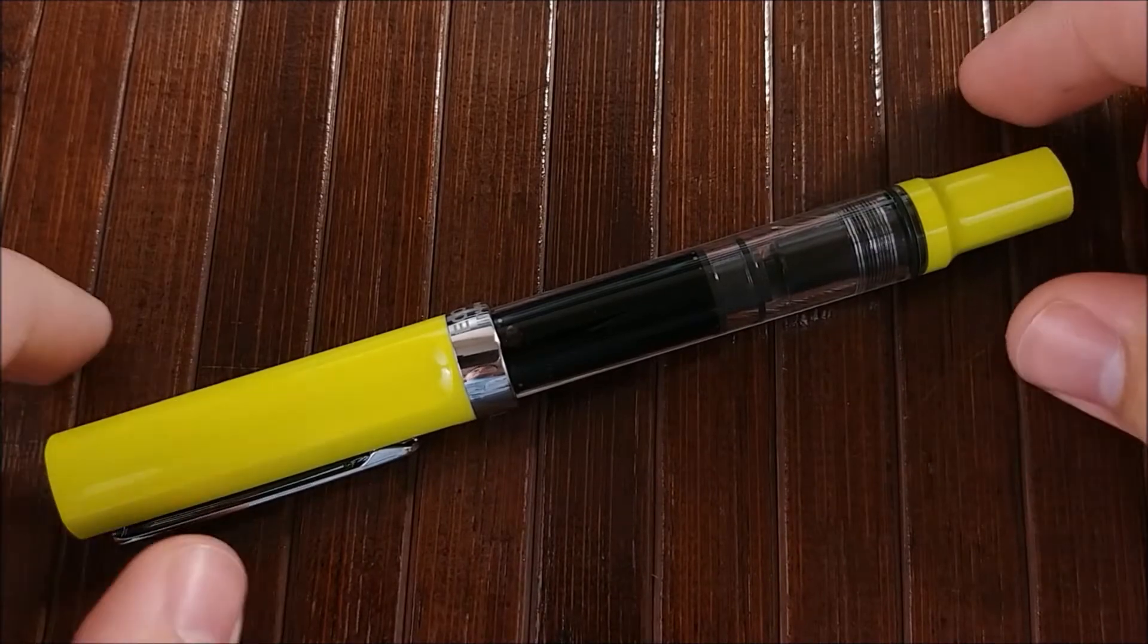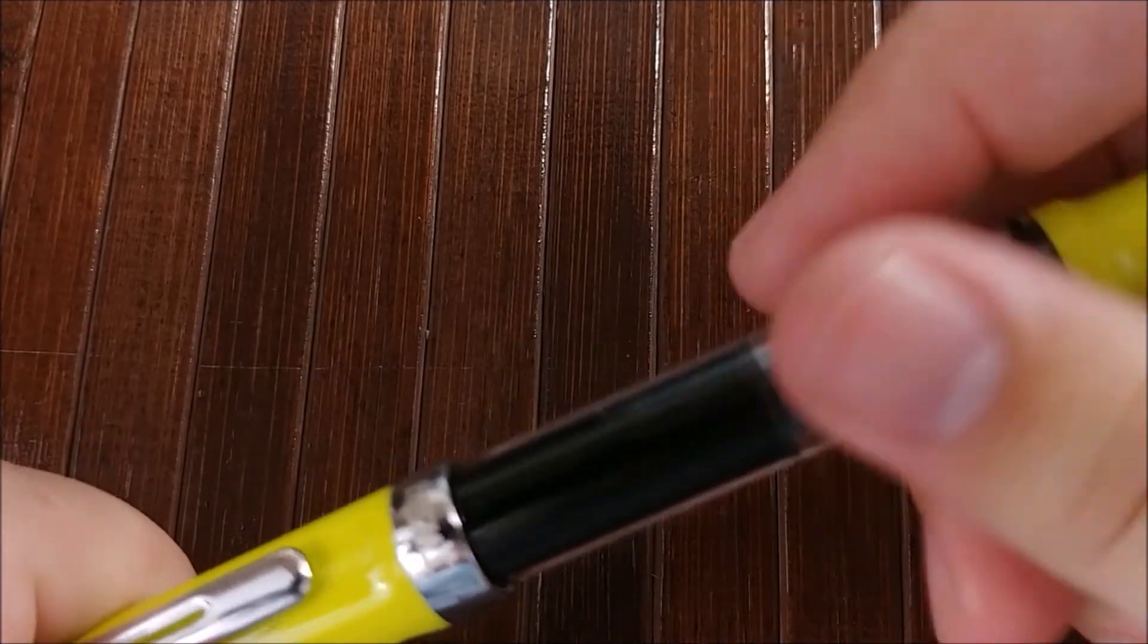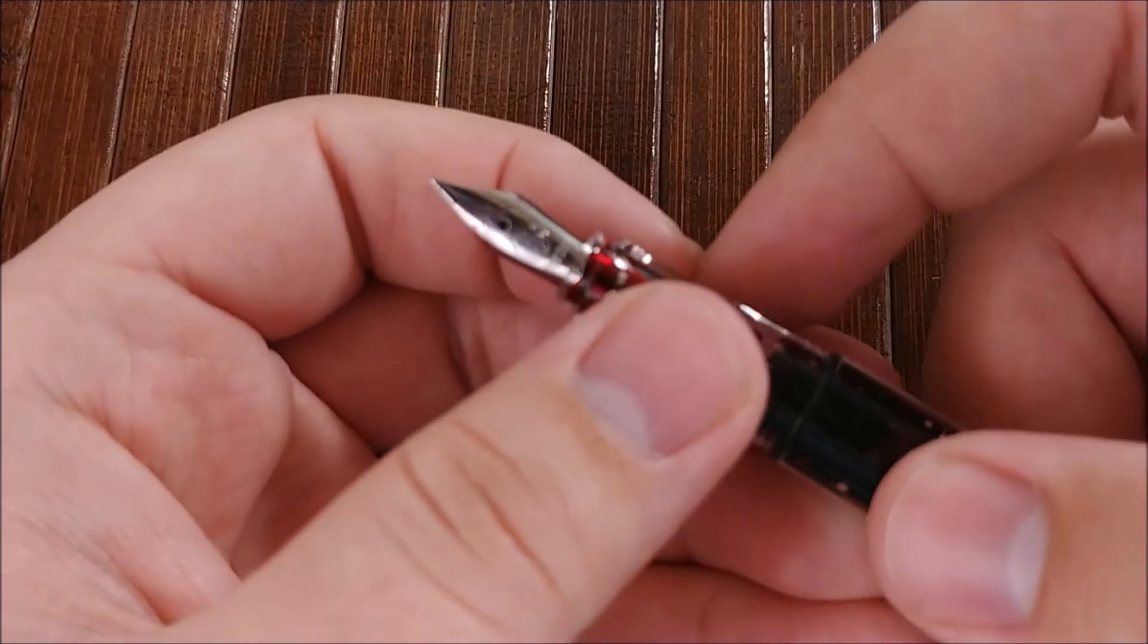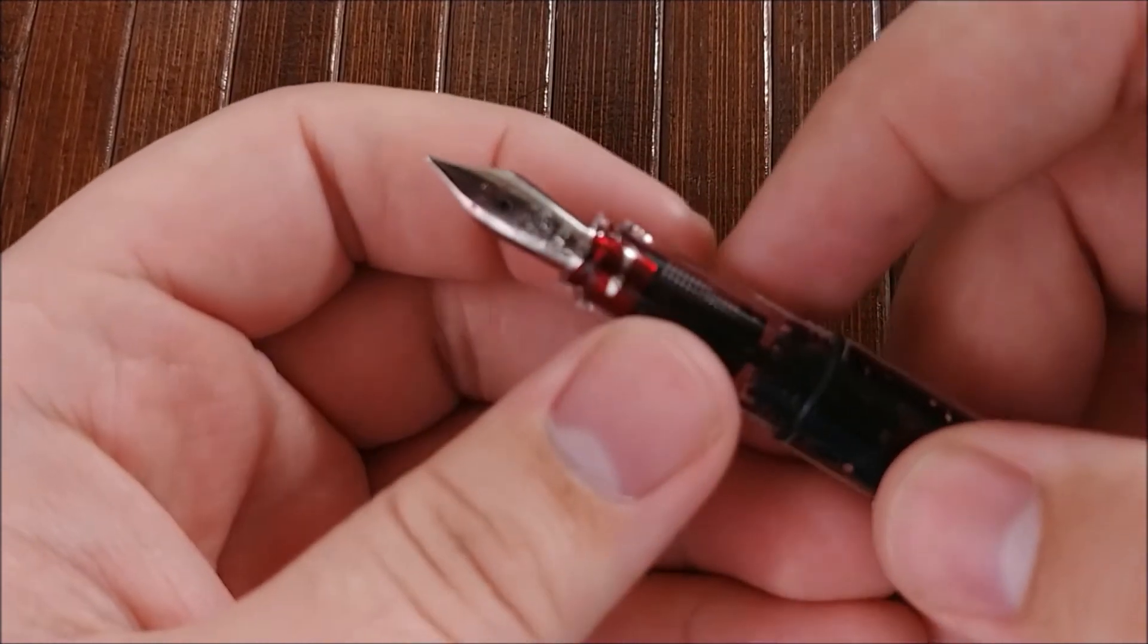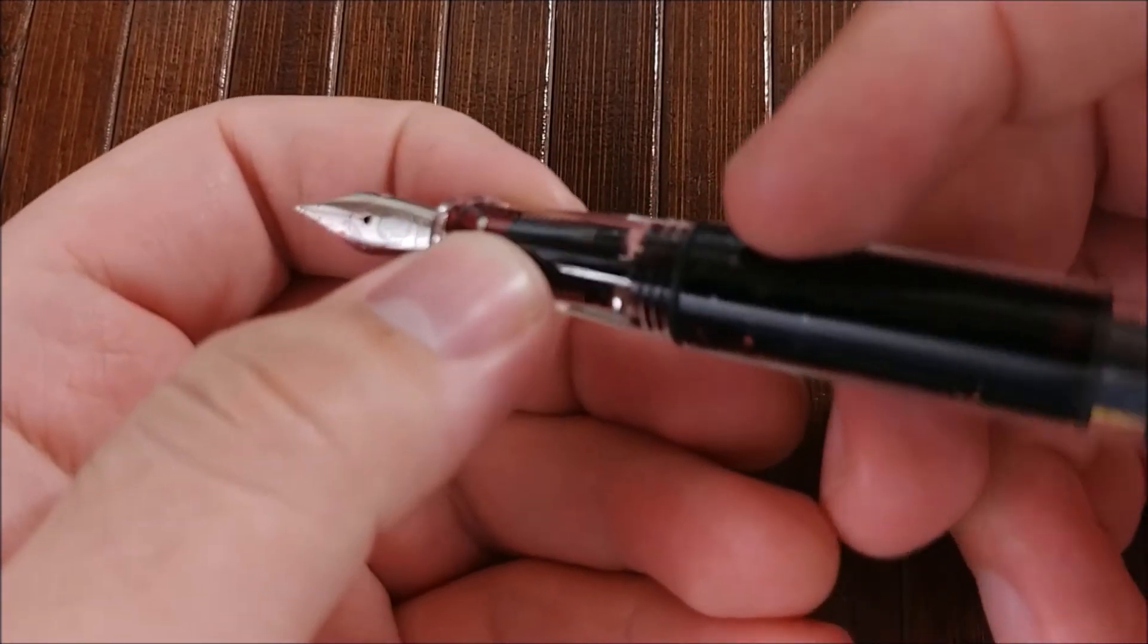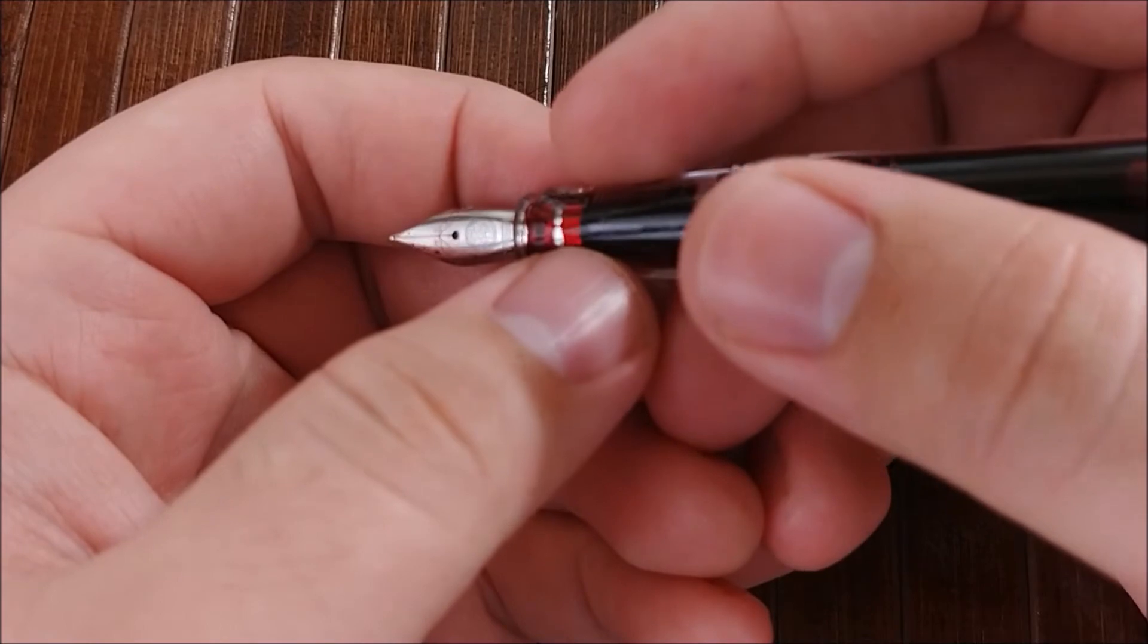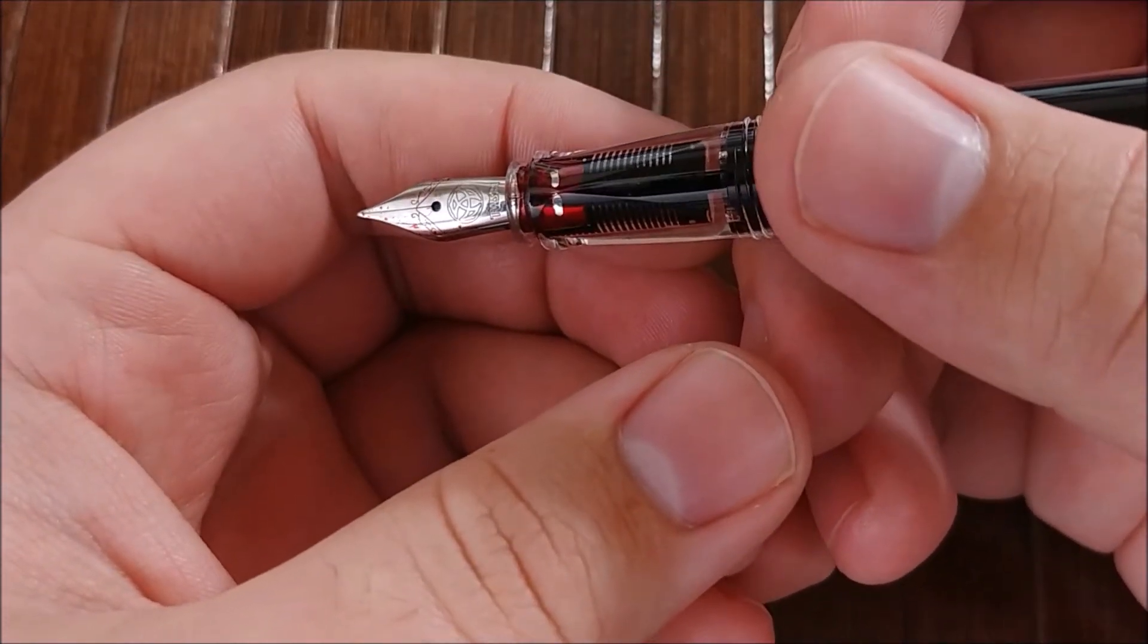All right, on to what I like about the pen. So the first thing, as with almost all the Twisbees I've used, the nib is really, really nice on this. It writes very smoothly, very consistently. I've had no hard starting issues, no skips or anything like that. It's a very reliable nib. The flow is pretty good. It's a little on the dry side, which we'll touch on a little later. But the flow is consistent. It's reliable. The pen is nice. And the nib looks pretty good.